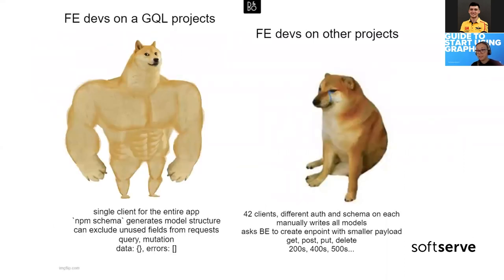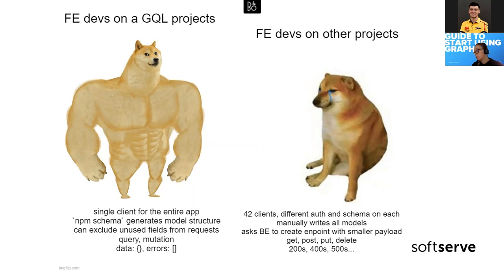Talking about front-end: GraphQL has amazing front-end support. React has an Apollo client which is really great with very good cache implementation. It provides a single entry point with shared schema, and can auto-generate model interfaces using schema introspection. On the front-end you can define the response payload however you want — only queries for getting data and mutations for modifying them. And error handling is easy because you just have an array of errors.